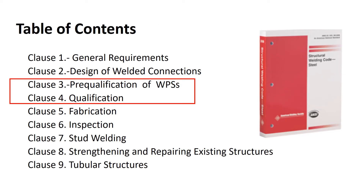Now we're going to dive into D1.1 and some of the little nuances in AWS D1.1, where they point out gas metal arc welding short-circuiting and say: this process is completely different from the other transfer modes and needs a special set of rules around short-circuiting mode of transfer.